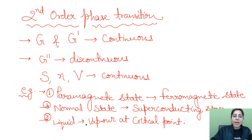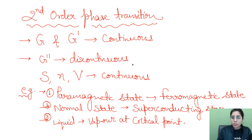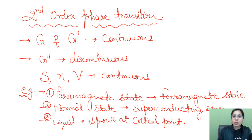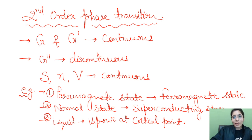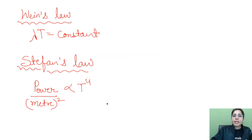For second order phase transitions, G and the first order derivative of G are continuous, while the second order derivative is discontinuous. Entropy S and volume V are continuous. Examples include paramagnetic-to-ferromagnetic conversion, normal-to-superconducting state conversion, and liquid-to-vapor at the critical point. Also important: Wien's law — lambda times T equals constant; and Stefan's law — power per meter squared is proportional to T to the power 4.